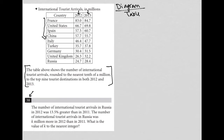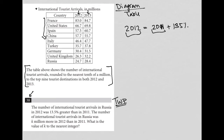The question says the number of international tourist arrivals in Russia in 2012 was 13.5% greater than in 2011. This is really a translate word problem question. I translate that by saying the 2012 number is equal to the 2011 number plus an additional 13.5%. However many people showed up in 2012 equals however many people showed up in 2011 plus 13.5% of that value.